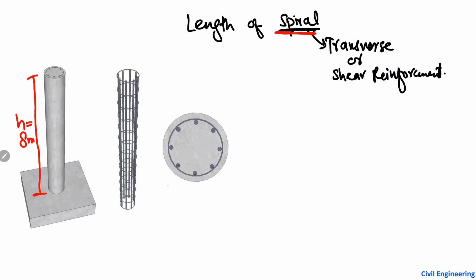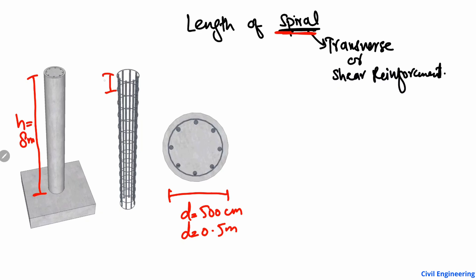We have the cross section of the column. The diameter of the column, for example, is 500 centimeters, or 0.5 meters. Also, the distance between the spirals is known to us — this distance is known as the pitch, P. For example, the distance between two spirals is also 0.5 meters. This pitch P is maintained throughout the height or the depth of the column, so P is also known to us.